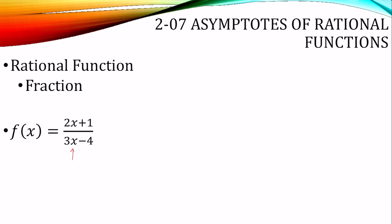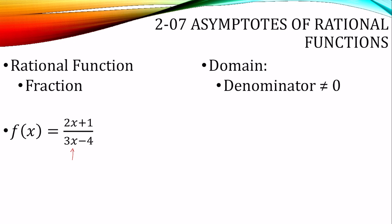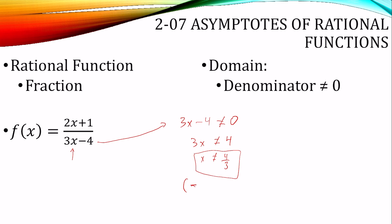To find the domain of a rational function, the denominator cannot be equal to 0. So we make it not equal to 0 and solve for x. To find the domain of this one, I take my denominator, 3x minus 4, make it not equal to 0, and solve for x. Add 4 and divide by 3. So my domain is x doesn't equal 4/3, which we could write in interval notation as negative infinity to 4/3, combined with 4/3 through positive infinity.